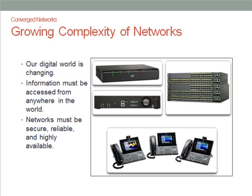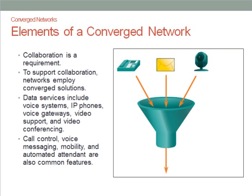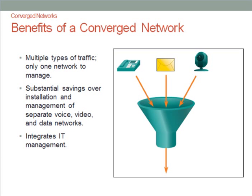In general, our computer networks are getting more and more complex because we have more information to be transmitted across the network. A converged network refers to the collection of information between devices such as IP phones, video conferencing support, and other features such as voice messaging for mobility. All these information are controlled in the network through a converged network. The benefits of a converged network include substantial savings through the installation and management of separate systems for voice, video, and data.